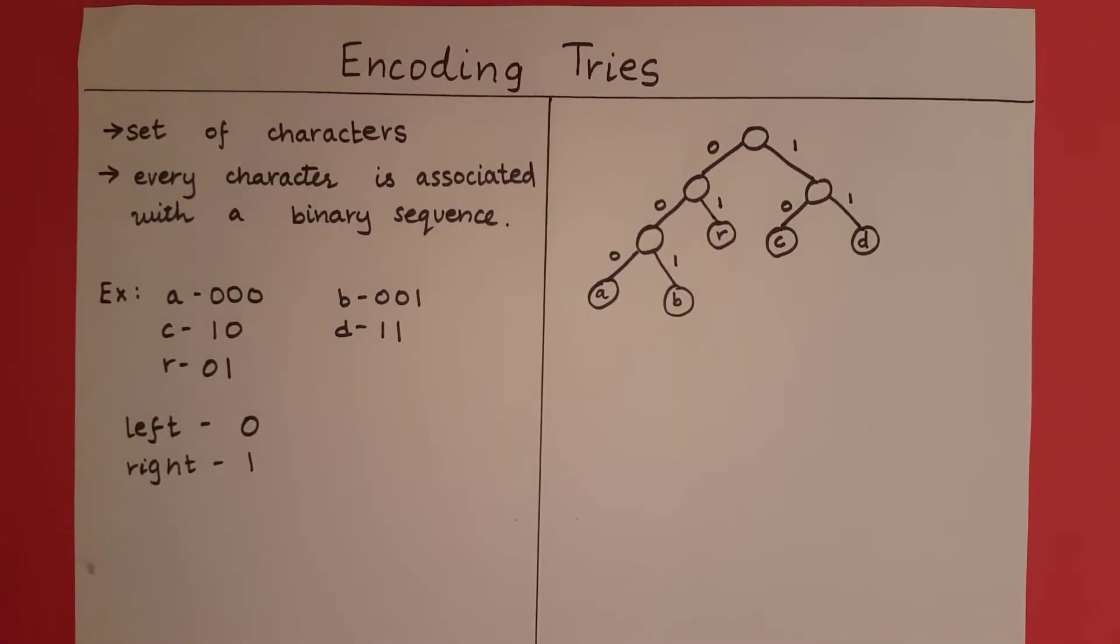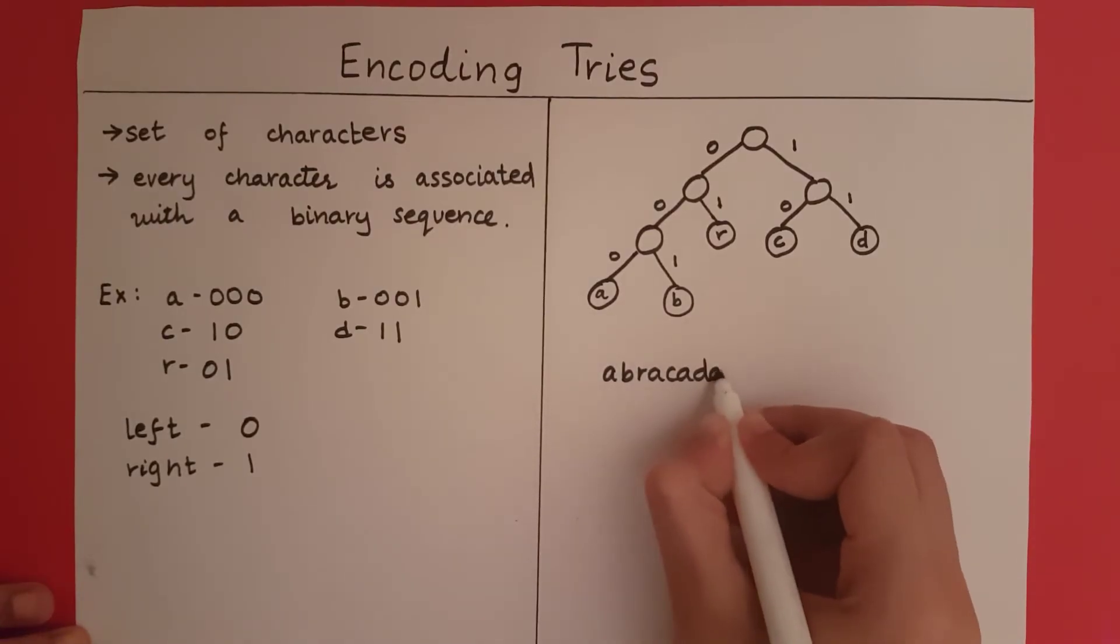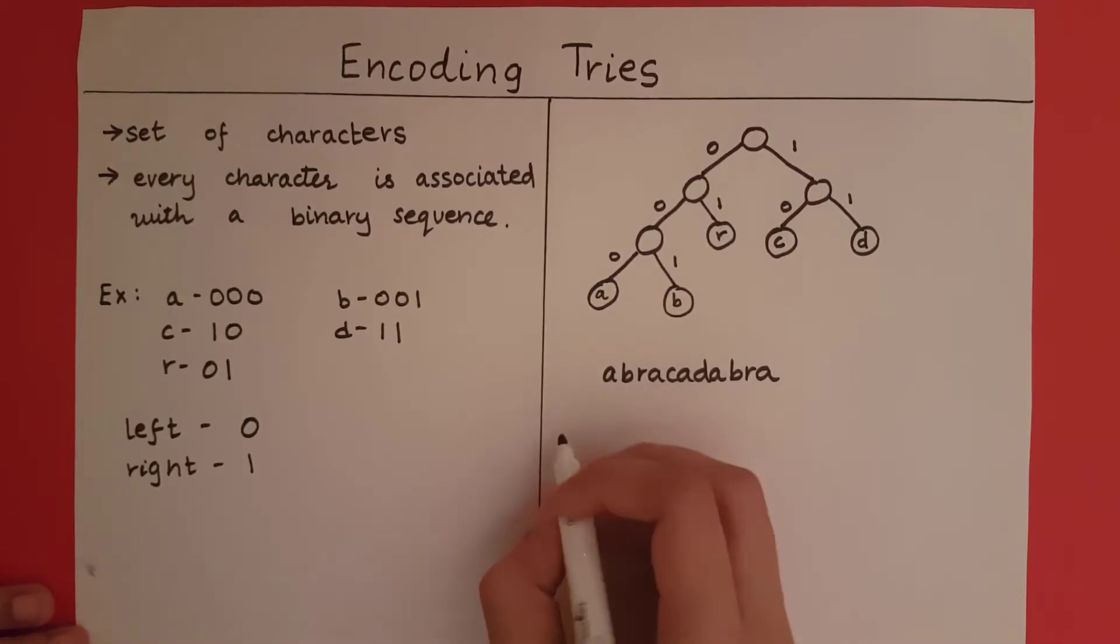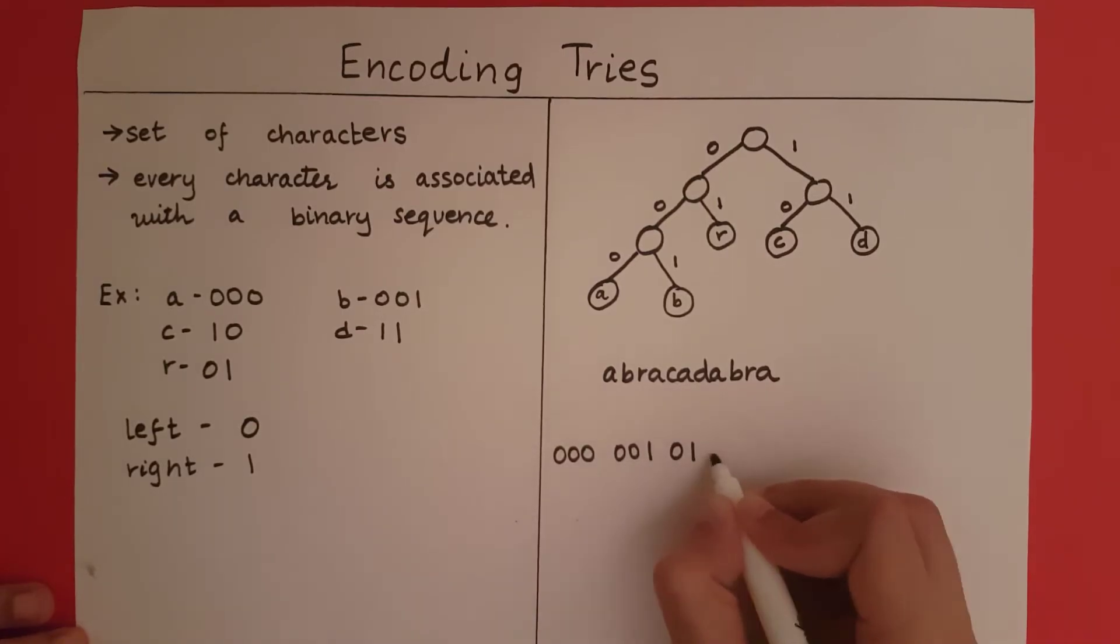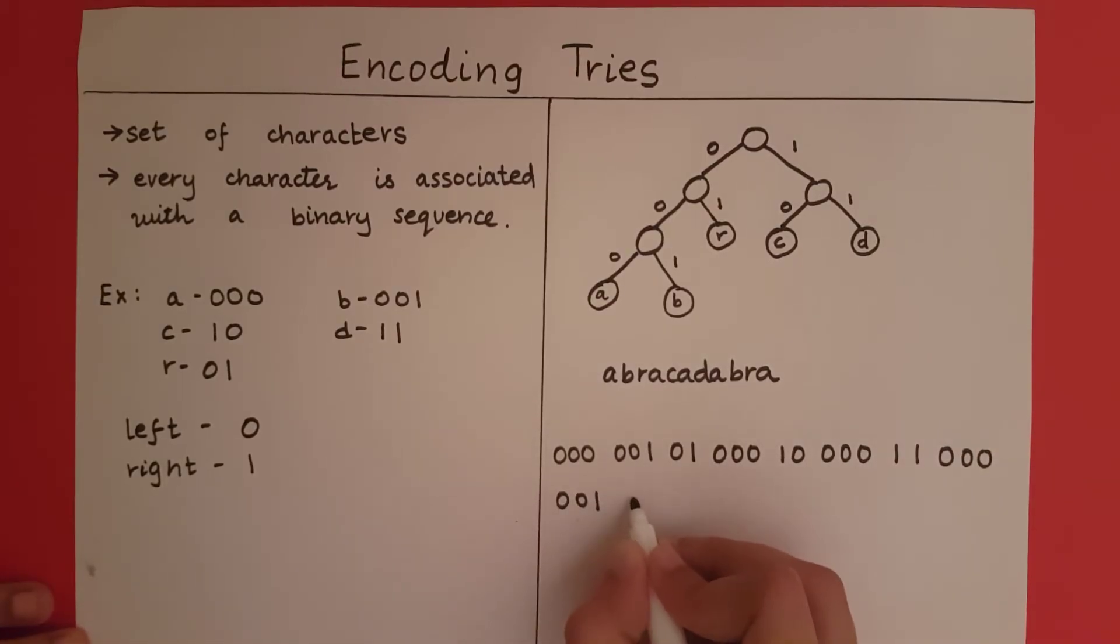So what is the point of creating an encoding trie? The function of an encoding trie is to encode a particular string whose characters are present in the encoding trie. So let's say I want to encode the string abracadabra. So now what I am going to do is I am going to scan character by character and add the binary sequence in my code. So at first I have A, so I have 000, then I have B, 001, then I have R, 01, A, C, A, D, A, B, R, and A.